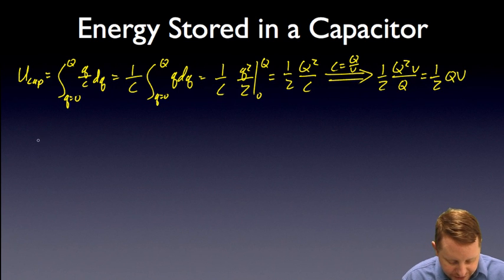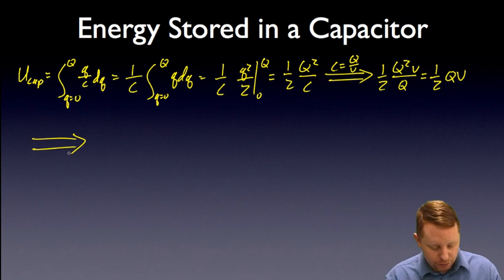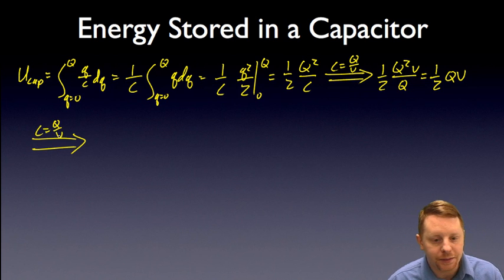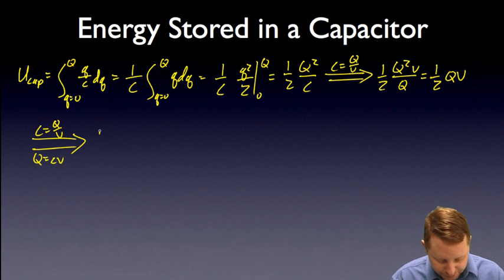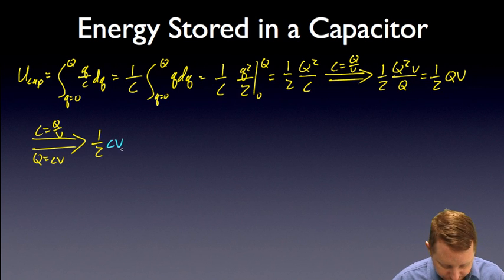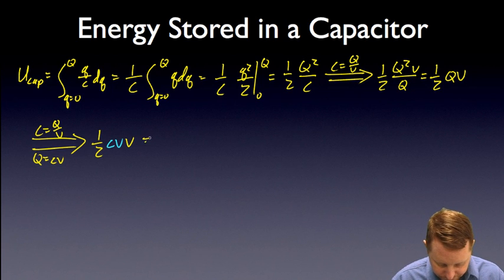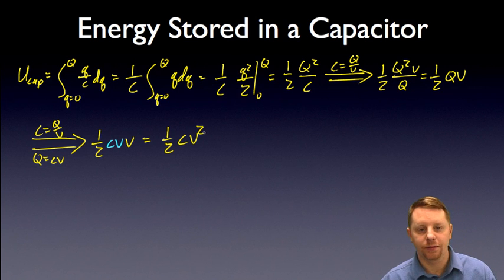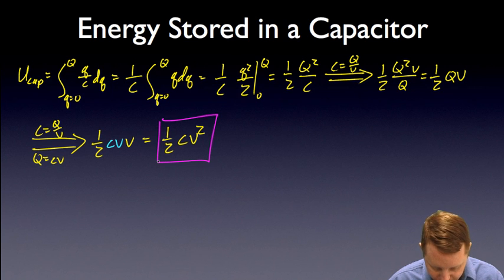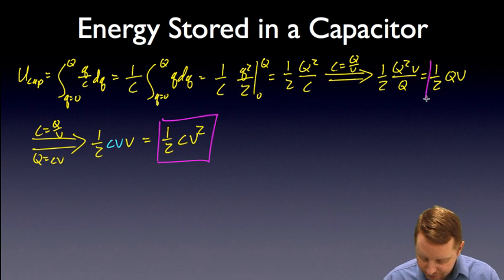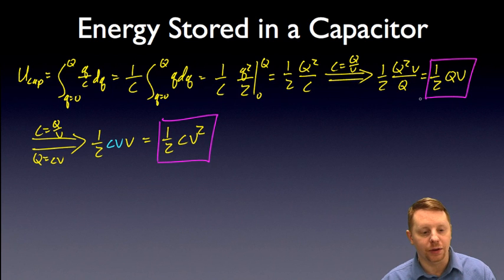Taking that a little bit further, we also know C equals Q over V, so Q must be equal to CV, so that becomes one half times CV times V, or one half CV squared. So we have two equations we can use for the potential energy stored in a capacitor: one half CV squared, and one half QV works just as well also.